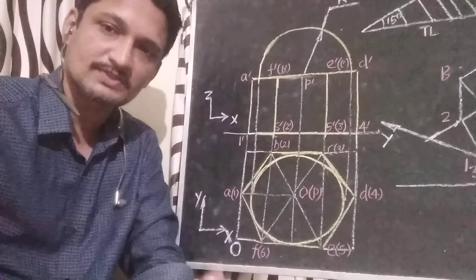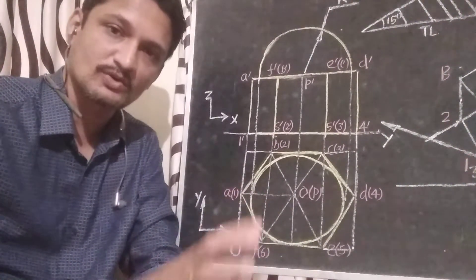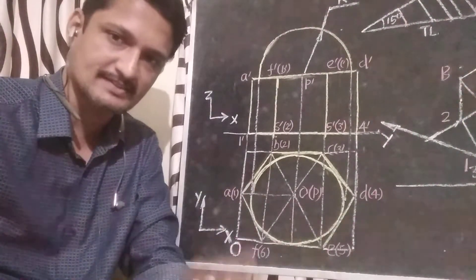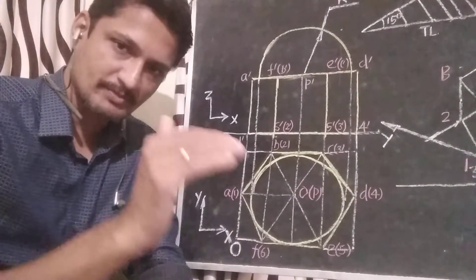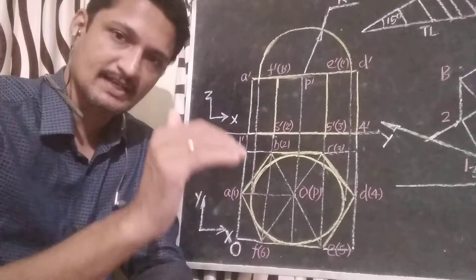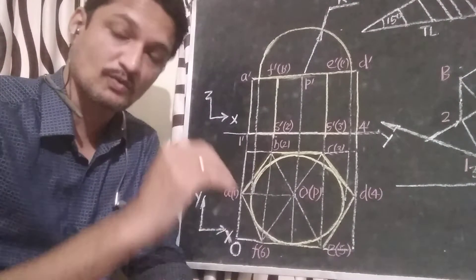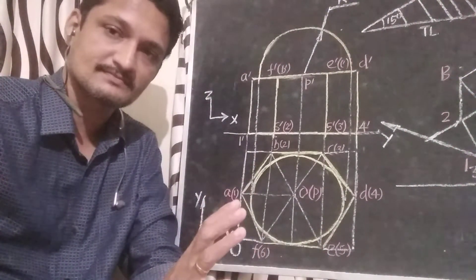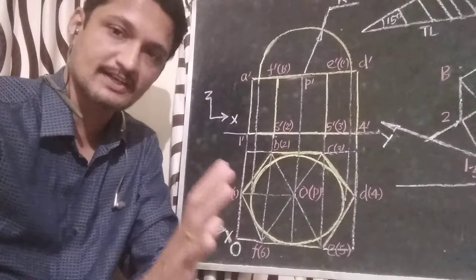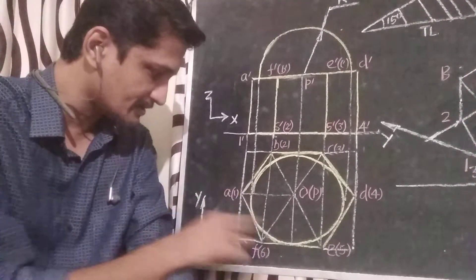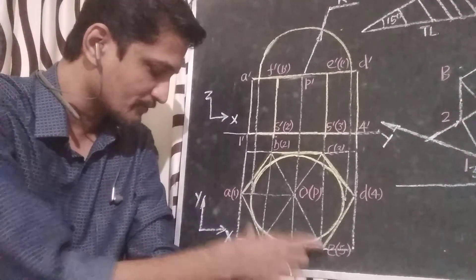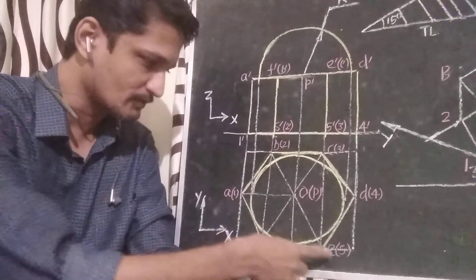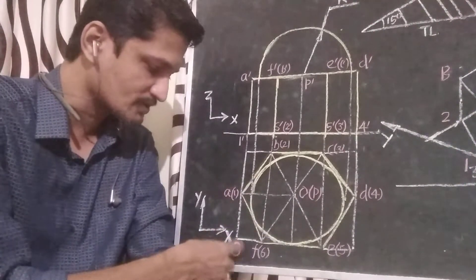In isometric projection, the x-y coordinate isometric scale factor is equal to 0.816 of the true length. That is our key concept: in isometric projection, the radius of a sphere is always the true length.